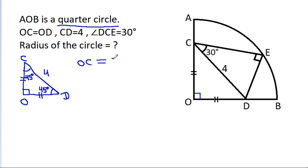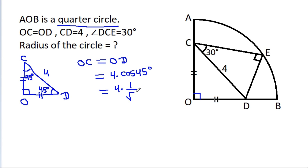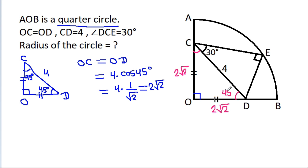So OC will be equal to OD, and that will be equal to 4 times cos 45 degrees, which is 4 times 1 over √2. That equals 2√2. So OC is 2√2, OD is 2√2, and these two angles are 45 degrees.